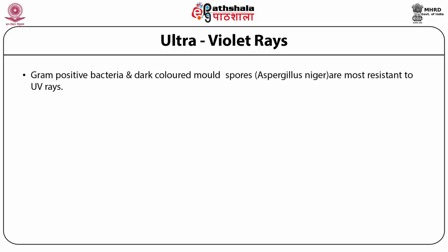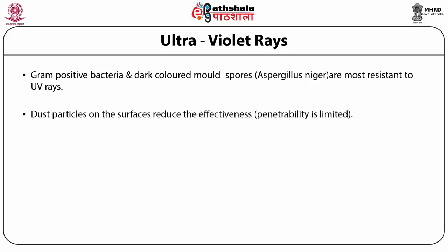Gram-positive bacteria require twice the dosage of gram-negative bacteria, and 5 to 10 times more for bacterial spores. Mold spores, particularly those with dark colors, such as Aspergillus niger, are especially resistant and require dosage levels 20 to 100 times higher. Covered, shaded, or shielded organisms will not be affected. Dust particles on the surface reduce the effectiveness of UV radiation for sterilization of aseptic packaging materials.